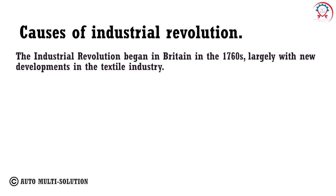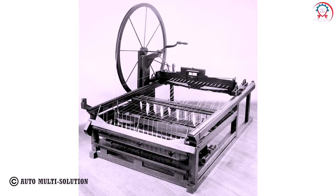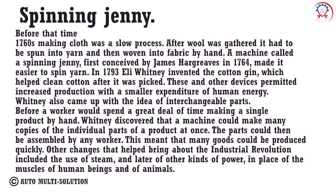Causes of the industrial revolution: The industrial revolution began in Britain in the 1760s, largely with new developments in the textile industry. The spinning jenny, invented by James Hargreaves, could spin eight threads at the same time, greatly improving the textile industry. Before that time, making cloth was a slow process — after wool was gathered, it had to be spun into yarn and then woven into fabric by hand.